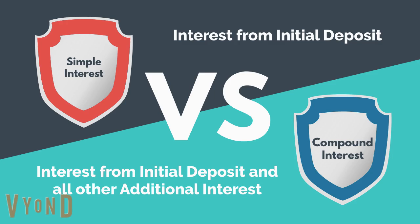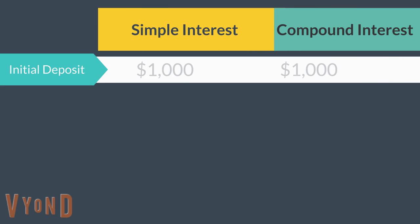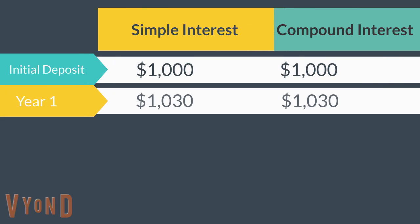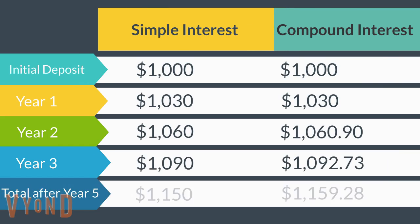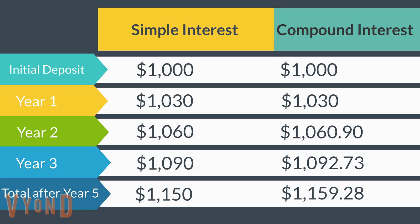Compounding can occur as often as four times per year, or just once a year. That is usually determined by your bank. Let's look at an example. Assume you earn 3% interest. Simple interest on $1,000 would be $30 annually for as long as you have the investment.